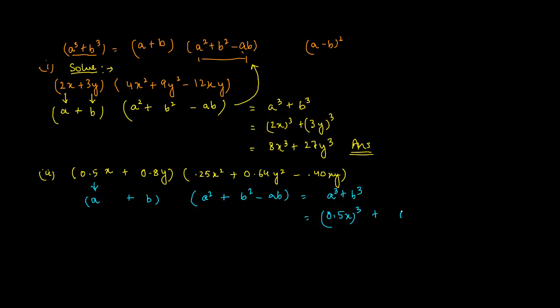So this becomes 0.5x cube plus 0.8y cube. So you've got x³ here, so 5³ is 125. Since there is a decimal, when you multiply it three times there are three decimal places, so 0.125x³.